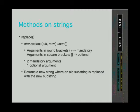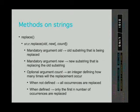The replace method returns a new string where an old substring, defined in the old argument, is replaced with the new substring, defined in the new argument. That is why these two arguments are mandatory — in order to replace something, you have to know what you are replacing (the old) and what you are replacing it with (the new). The third argument is optional and defines an integer saying how many times the replacement will occur. If we leave this argument out, the program assumes we want all replacements made. If we put some integer there, for example 3, the program will make only the first 3 changes.